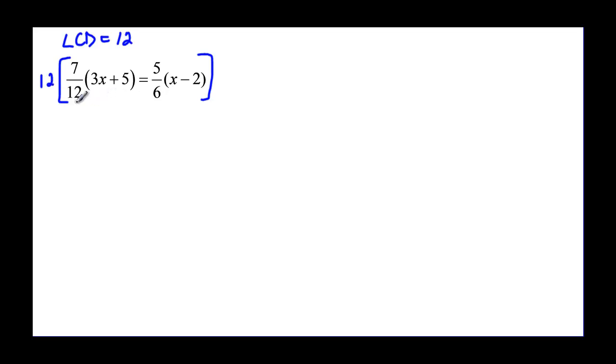Now look real closely. There is one term on this side and one term on this side, because this parenthesis, it's my fraction times this quantity, and this addition is not making me have a different term. This is all multiplication, so it's one term. So I am going to have 12 times 7 over 12 times my 3x plus 5, equal to 12 times my 5 over 6 times my x minus 2.